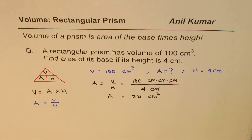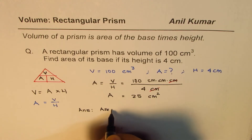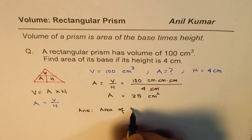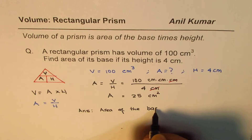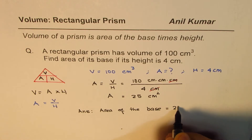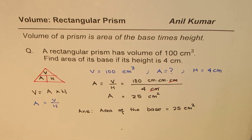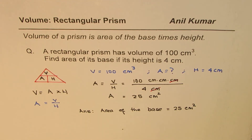25 centimeter times centimeter means centimeters squared, so that becomes the area for us. We get area equals 25 centimeters squared. So the area of the base equals 25 centimeters squared. That is how you can find the area of the base. Now here is another question for you, and it's a trick question.